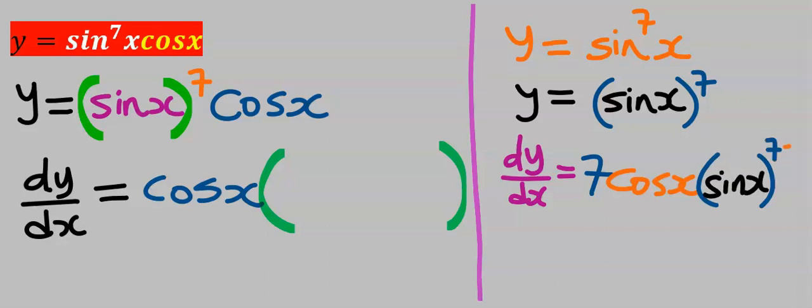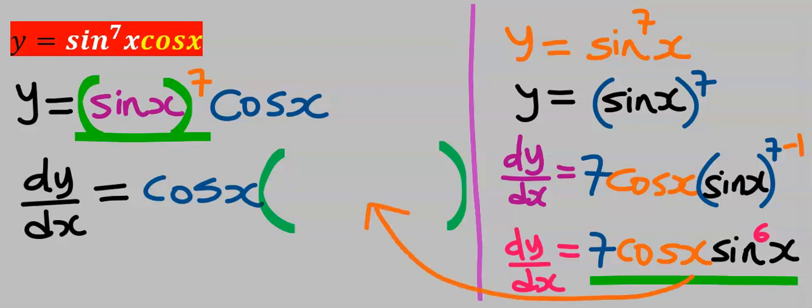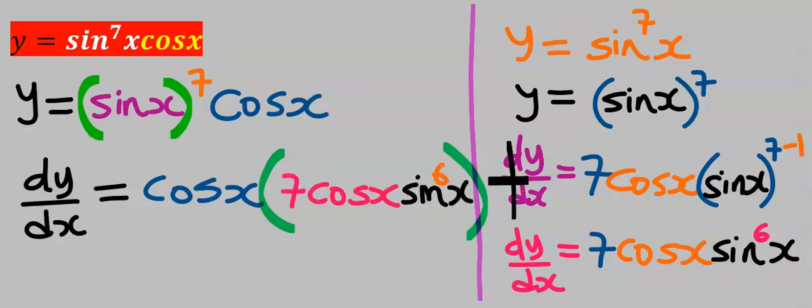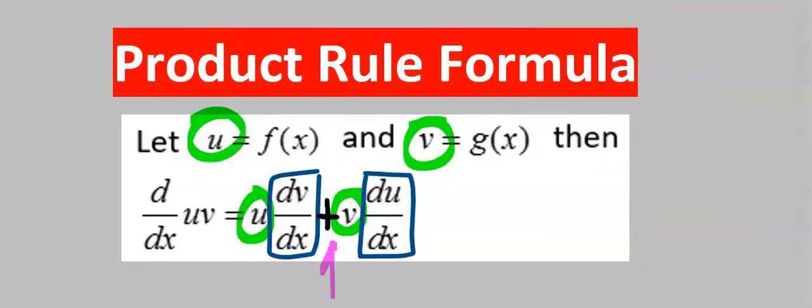Next I will copy back this sine x. Next this seven will minus one and the answer is seven cos x sine six x which is going to come in here. Next we are going to have a plus according to product rule formula.